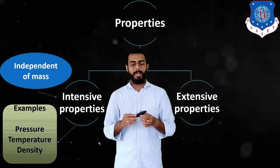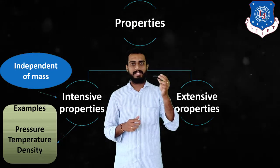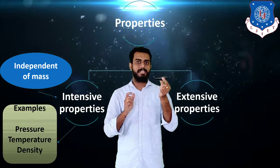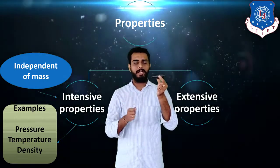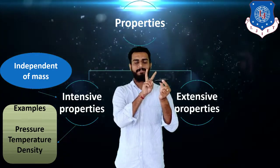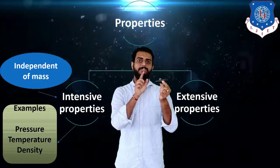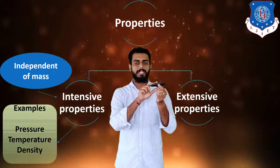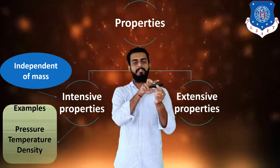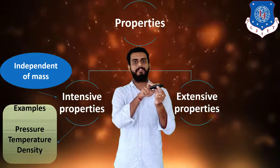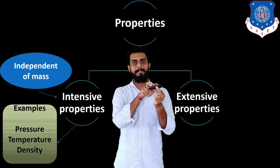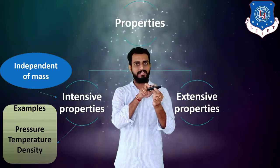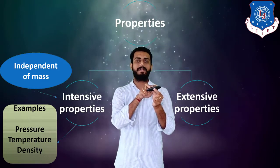Let me explain in a simple way. Consider a metal rod having a temperature of 50 degrees Celsius. Now if I cut this metal rod into two equal halves, those two halves will also have the same temperature, 50 degrees Celsius. So though I am changing the mass, the property is not getting changed. That is why temperature is a property independent of mass.